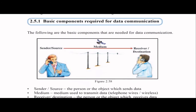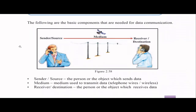The basic components of data communication are: a sender or source — the person or object which sends the data or information; a receiver or destination — the person or object which receives it; a medium used to transmit the message; and a message itself. The medium can be wired or wireless, and we'll be learning about these shortly.